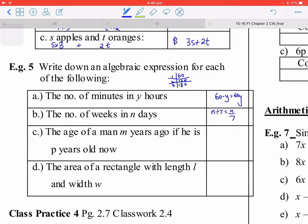The age m years ago if she is p years old now. So that means that is p, and that will be m years ago, so you just have p minus m.